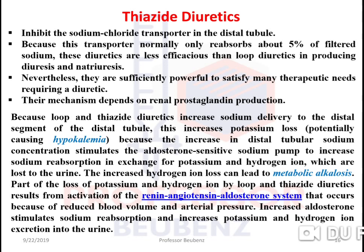Because loop and thiazide diuretics increase sodium delivery to the distal segment of the distal tubule, this causes increased potassium loss — meaning they cause hypokalemia. This is a very important GPAT question. The increased distal tubular sodium concentration stimulates the aldosterone-sensitive sodium pump to increase sodium reabsorption in exchange for potassium and hydrogen ions lost to the urine. The increased hydrogen ion loss can lead to metabolic alkalosis. This potassium and hydrogen ion loss also results from activation of the renin-angiotensin-aldosterone system due to reduced blood volume.